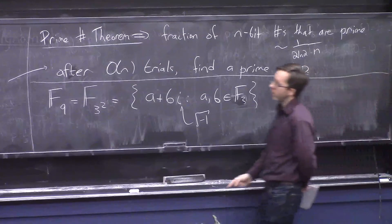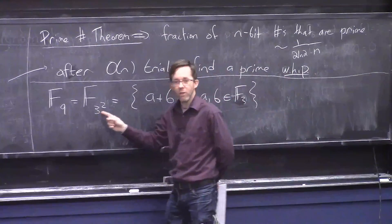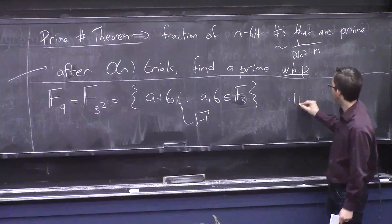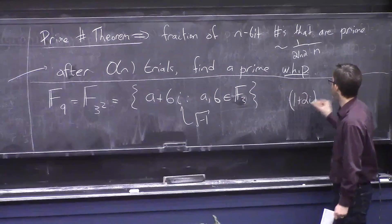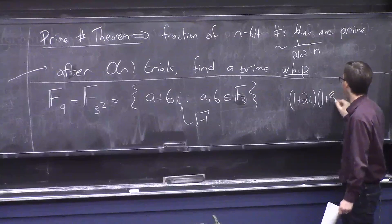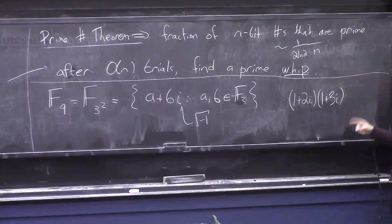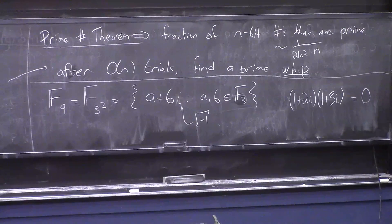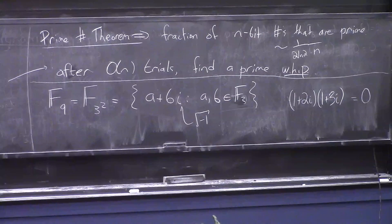But on the other hand, if you try to get the field of size 25 by just changing all the threes to fives, it doesn't work. 1 plus 2i times 1 plus 3i. If you do the coefficients mod 5, I think this is zero. And that's bad in a field, right? You shouldn't have two non-zero numbers multiplying to give you zero.